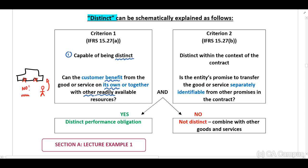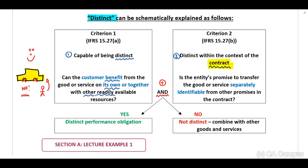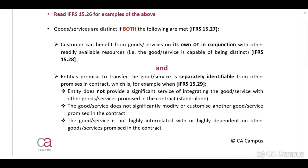Think about distinct in terms of our vehicle example. The second question — and it is important that both of these criteria are met — is: is the good or service distinct within the context of the contract? Emphasis on the contract. The question is whether the entity's promise to transfer the good or service is separately identifiable from other promises in the contract. This means the entity does not provide a significant service of integrating the good or service with other goods or services promised in the contract.